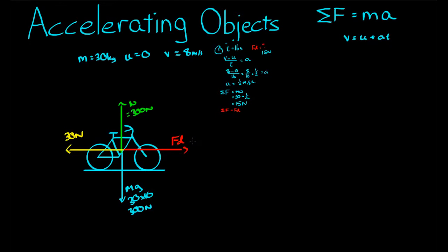The reason the acceleration hasn't changed is because we still have the same time, the same final velocity, and the same initial velocity. So acceleration is still a half meters per second squared. Therefore, the net force is also the same. 30 times a half, or 15.